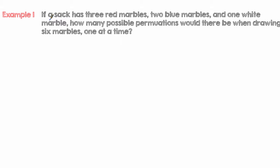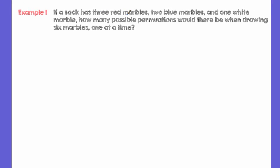So let's say in our example if a sack has three red marbles, two blue marbles, and one white marble, how many possible permutations would there be when drawing six marbles one at a time?